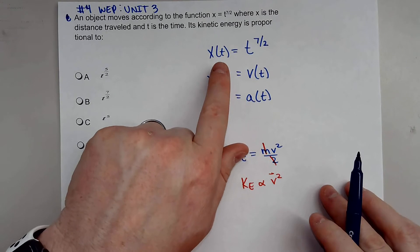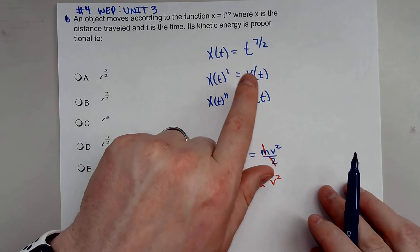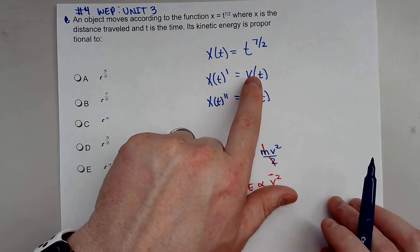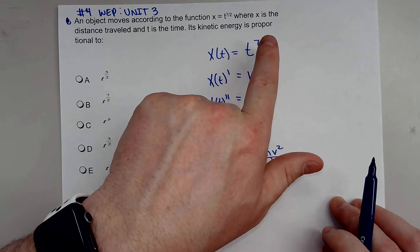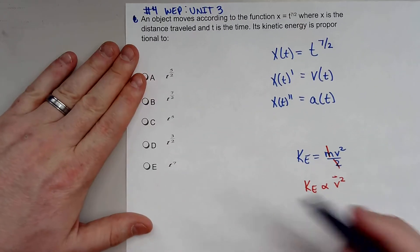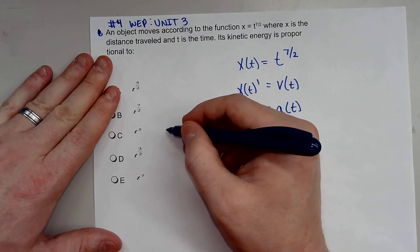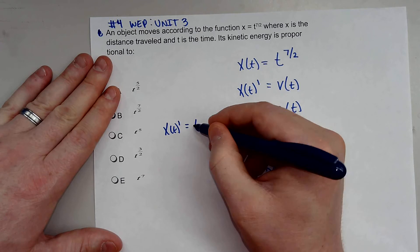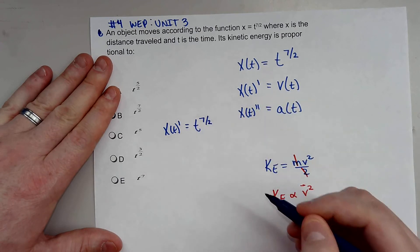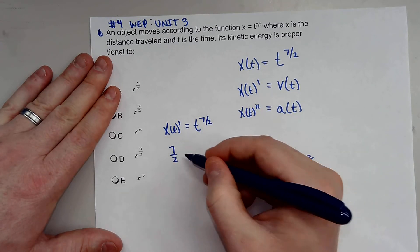Now, it gives us a position function with respect to time, but we need to find a velocity function with respect to time. So what we're going to have to do is take the derivative of this. The derivative of this position function with respect to time gives me (7/2)t.